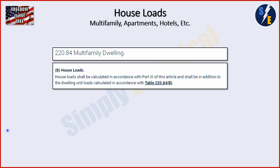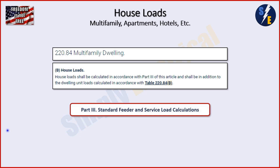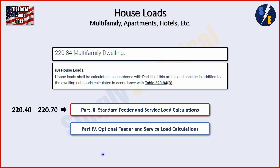We're under 220.84, which is the optional method in article 220, but it's referring us back to part three, which is the standard method for our calculation when we add these house loads. As a quick recap on how the code book is laid out: part three is for standard feeder and service load calculations, found in 220.40 through 220.70. Part four is the optional feeder and service load calculations, found between 220.80 and 220.88. So 220.84 puts us smack dab in the middle of part four — the optional method — but it's telling us we have to go back to part three for the house loads specifically.